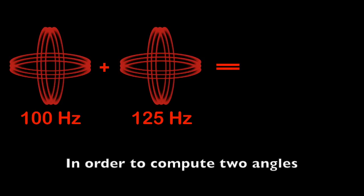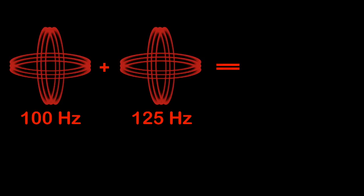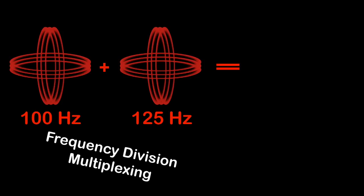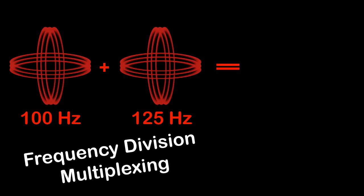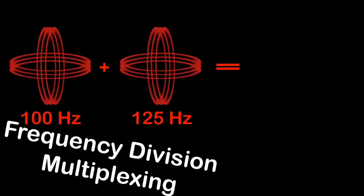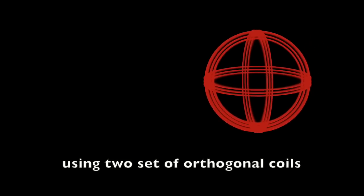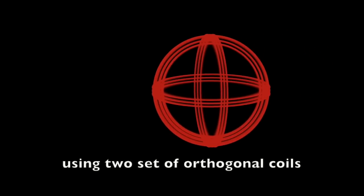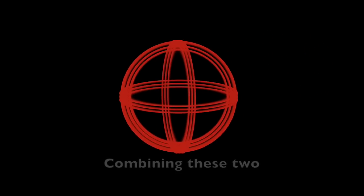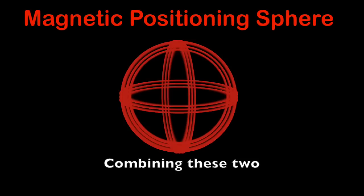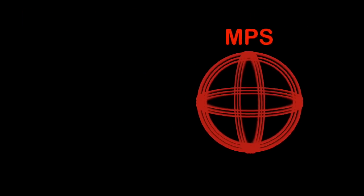In order to compute two angles at the same time, I've used frequency division multiplexing to generate rotating magnetic fields with two different frequencies using two sets of orthogonal coils. Combining these two, the magnetic positioning sphere, NPS, has been created.